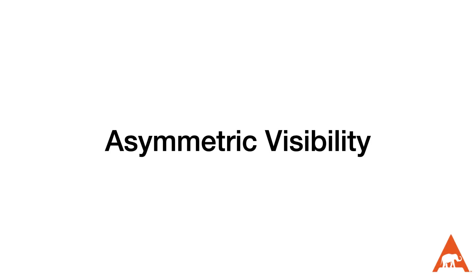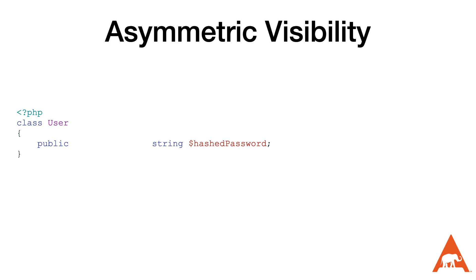Another feature added to PHP 8.4 as part of the property hooks functionality is the ability to define properties that have asymmetric visibility. This means that we can define a property that can be publicly get but can only be set by the class or its children. We do this by declaring the property as public like normal but then adding either private set or protected set before the type.